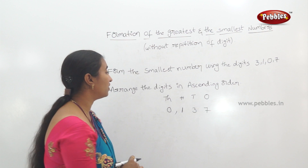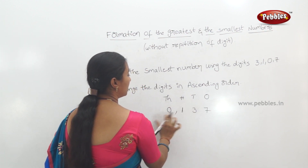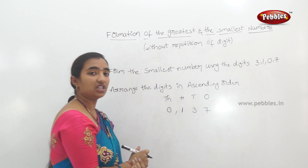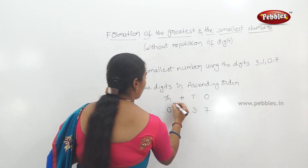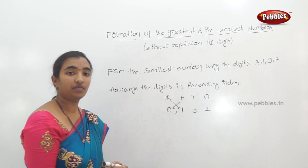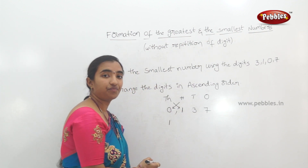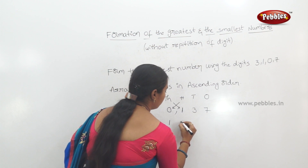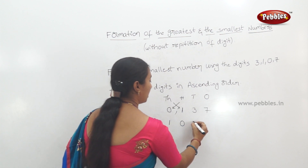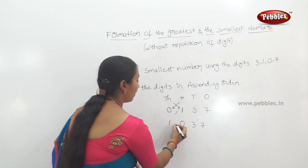The value of 0 in the 1000s place is not valid, so we place 1 in the 1000s place, 0 in the 100s place, 3 in the 10s place, and 7 in the 1s place. The smallest number is 1,037.